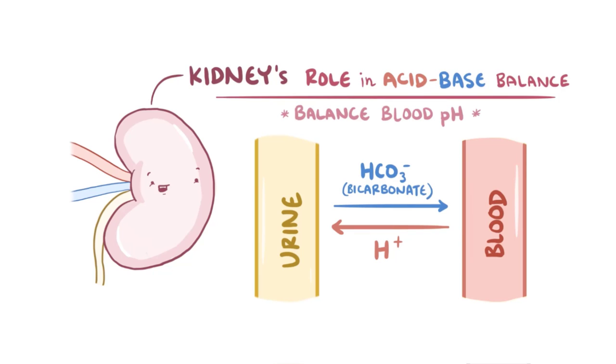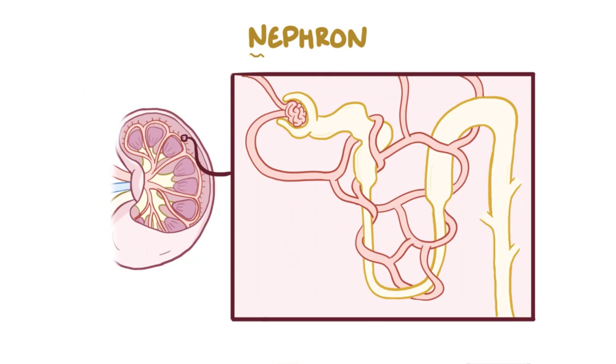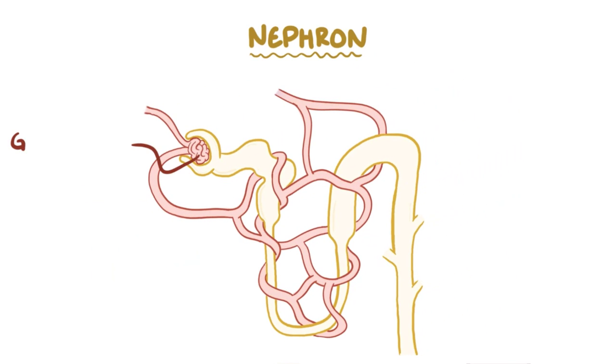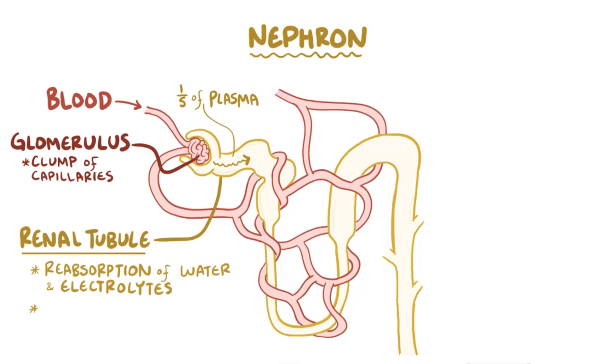Our kidneys filter blood continuously by distributing the blood that comes into the kidney to millions of tiny functional units called nephrons. Each nephron is made up of a glomerulus, or a tiny clump of capillaries where blood filtration starts. When blood passes through a glomerulus, about one-fifth of the plasma leaves the glomerular capillaries and goes into the renal tubule. The renal tubules function to reabsorb the good stuff like water and electrolytes and leave behind the bad stuff like waste products and acid.